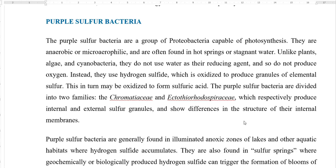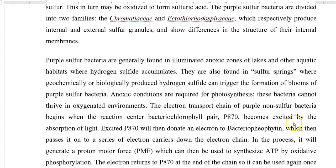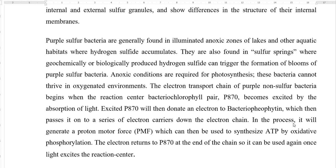In certain conditions, elemental sulfur can be further oxidized to form sulfuric acid. Purple sulfur bacteria are divided into two families: Chromatiaceae and Ectothiorhodospiraceae. Members of Chromatiaceae form sulfur granules internally, whereas Ectothiorhodospiraceae form external sulfur granules, and the internal membrane arrangement also differs between the two families. Purple sulfur bacteria are generally found in illuminated anoxic zones of lakes and aquatic habitats where hydrogen sulfide accumulates, and in sulfur springs where geochemically or biologically produced hydrogen sulfide is available, triggering blooms of purple sulfur bacteria. These bacteria require strict anaerobic conditions for photosynthesis and cannot thrive in oxygenated environments.